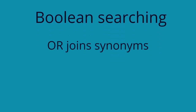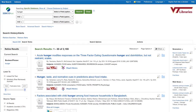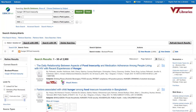With Boolean, the word OR is used within a concept to join synonyms. Basically, OR broadens our search by saying that any of the terms joined with OR is acceptable in our results. Adding more synonyms will give us more results. For example, if I search just for the word hunger in a database, I get around 2,100 results. However, if I use OR to add the synonym food insecurity, I get almost 3,000 results.